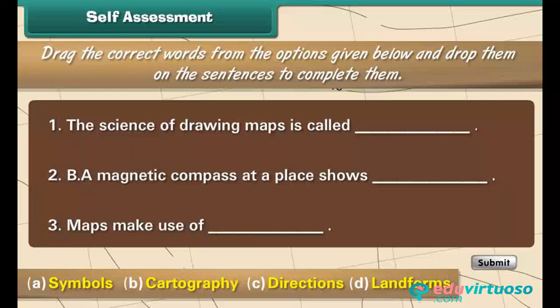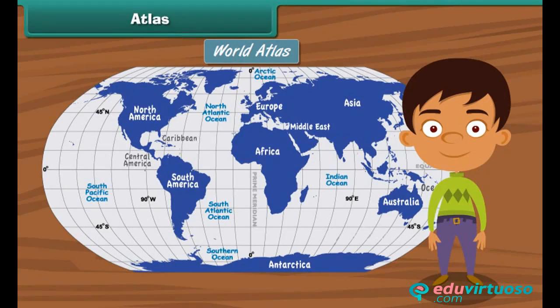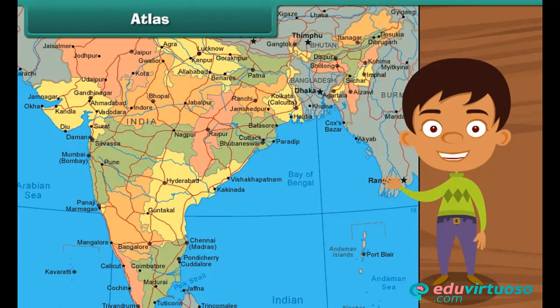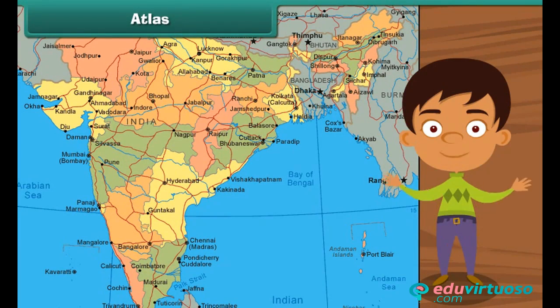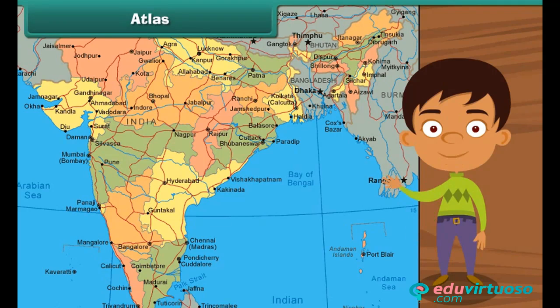An atlas is a collection of maps and charts. The maps in an atlas give the geographical information about different parts of the world. The charts in an atlas contain details of specific locations such as population, sea levels, crops produced, etc.